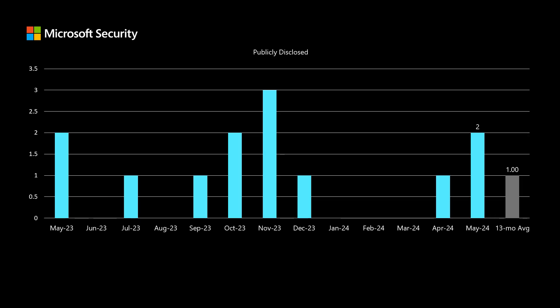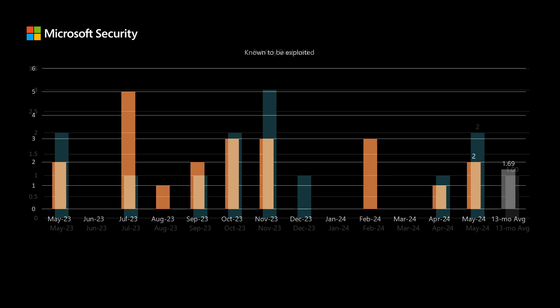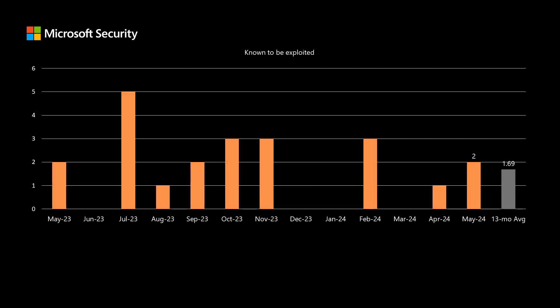Let's move on to a couple other risk factors when we talk about vulnerabilities. The first one is publicly disclosed vulnerabilities, where we've been averaging right at one for the past year, and in today's set we have two vulnerabilities that are publicly disclosed. And finally, known to be exploited — there are two vulnerabilities that are known to be exploited at the time of release in today's set.